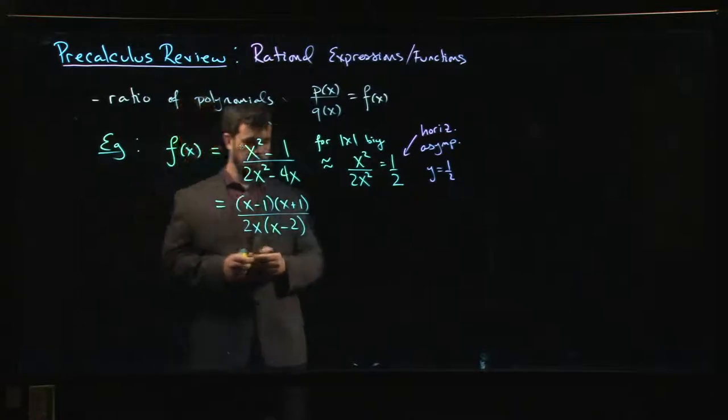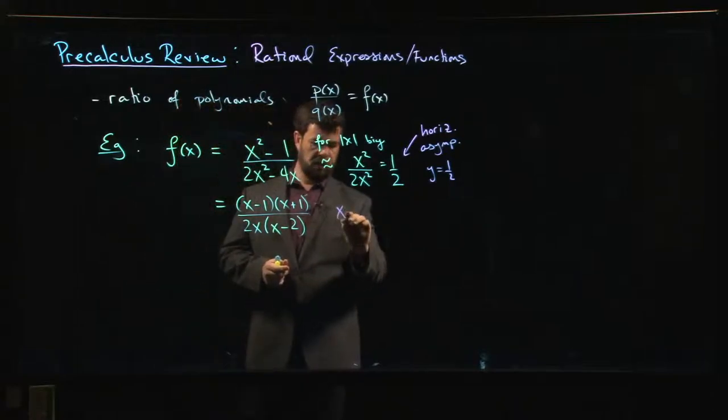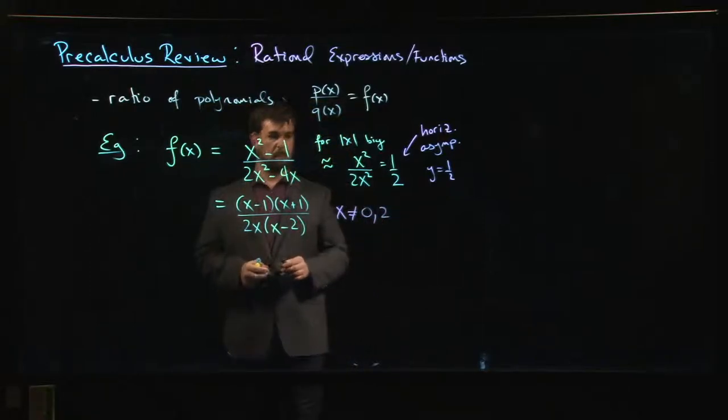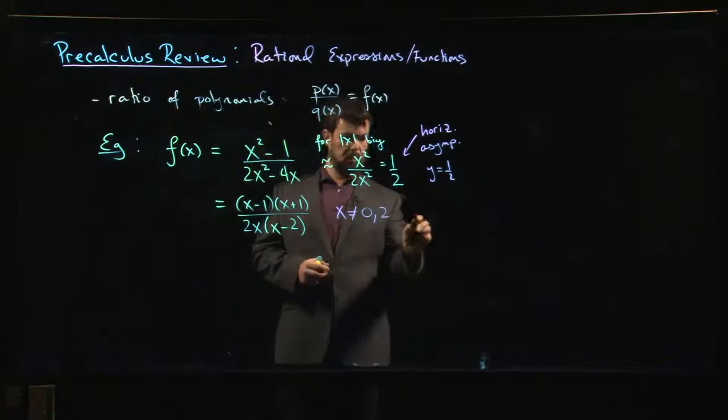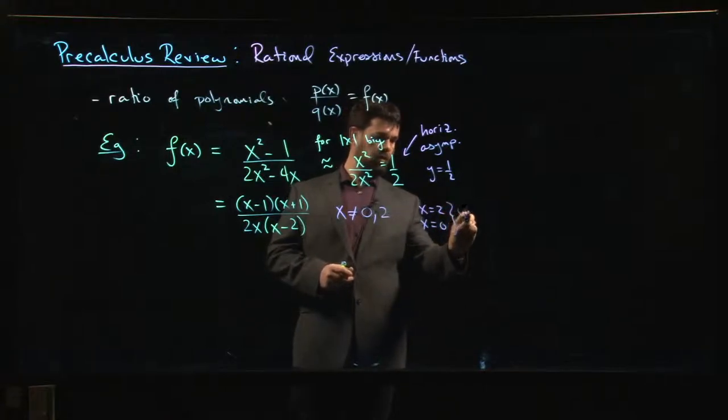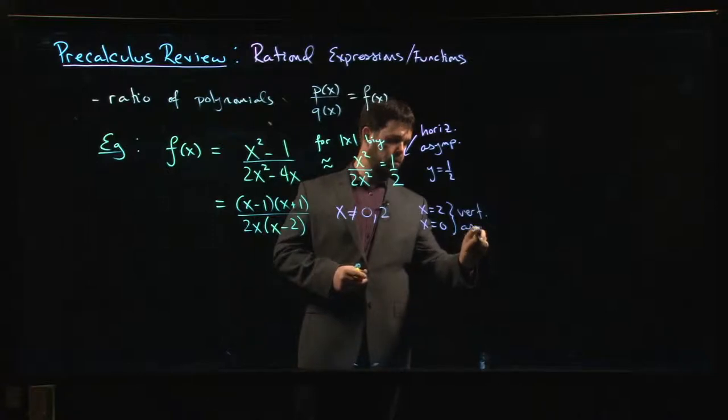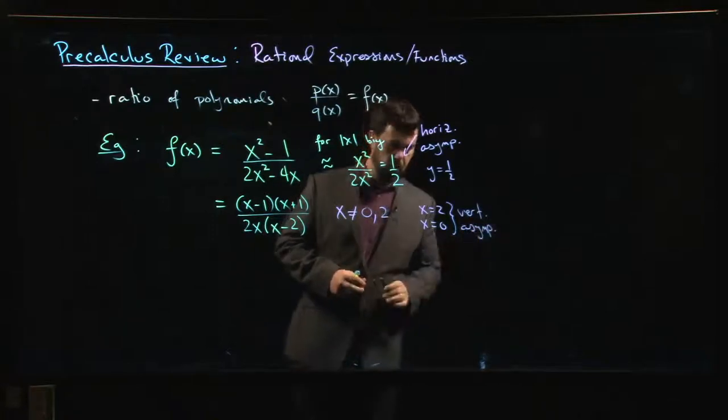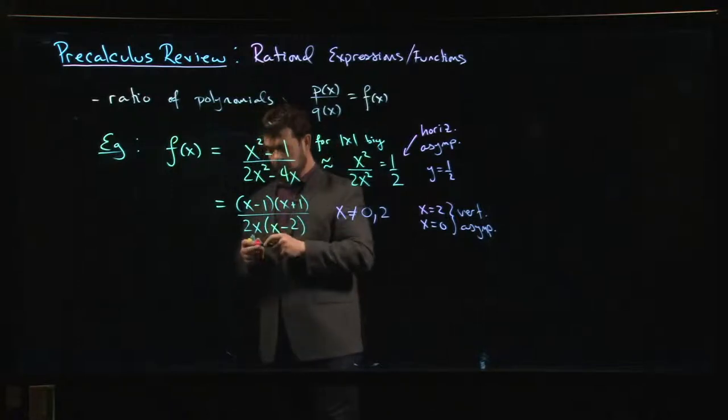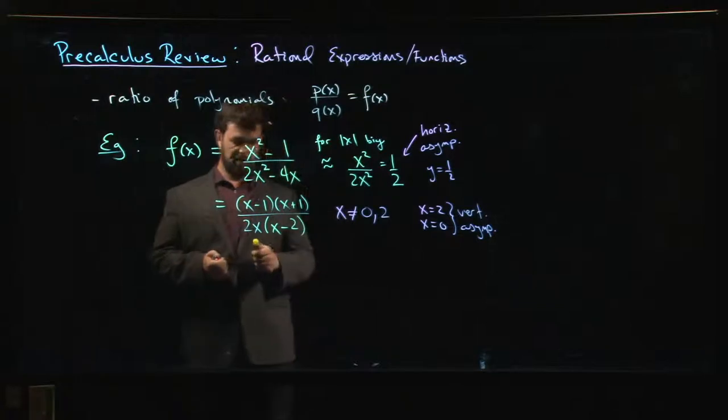Right away from here we can see that x cannot equal 0 and it cannot equal 2. So that means that x equals 2 and x equals 0, these are vertical asymptotes. Neither of these zeros in the denominator cancels with something in the numerator, so we know that those have to be vertical asymptotes.